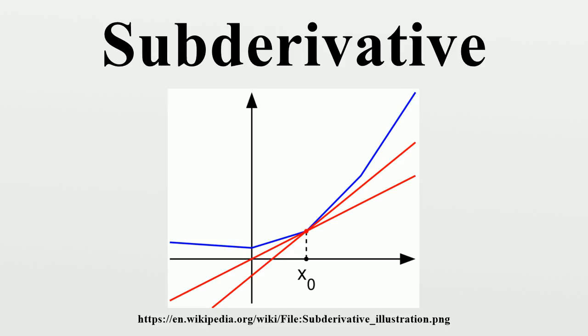A convex function F:I→R is differentiable at x₀ if and only if the sub-differential is made up of only one point, which is the derivative at x₀.